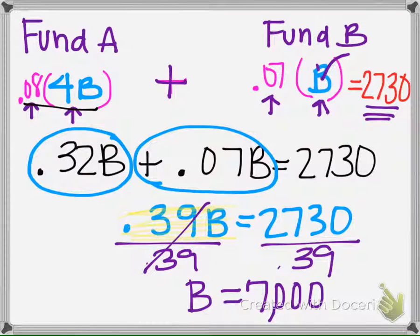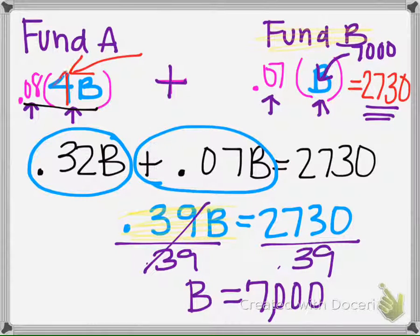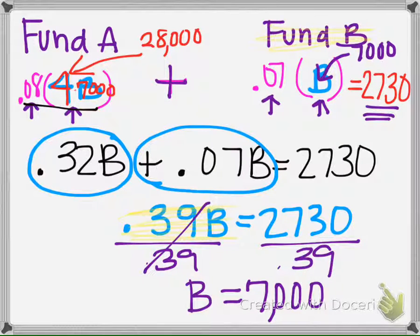She's going to put $7,000 into this fund. It tells us it's four times the amount in Fund A, so if B is $7,000, then $7,000 times 4 means she's going to put $28,000 into Fund A.